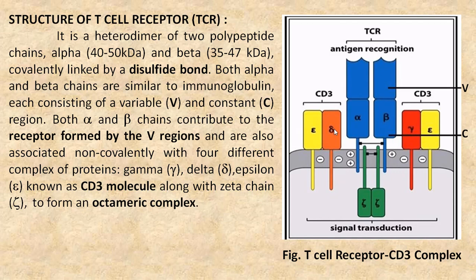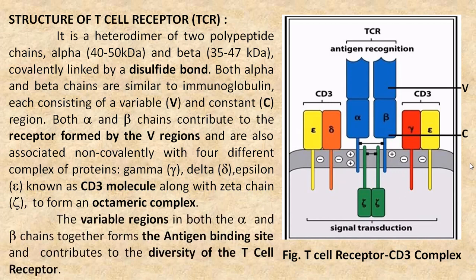delta, epsilon — known as the CD3 molecule — along with the zeta chain to form an octameric complex. The variable regions in both alpha and beta chains together form the antigen binding site and contribute to the diversity of T cell receptor.